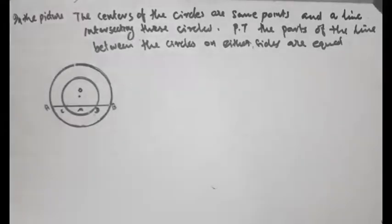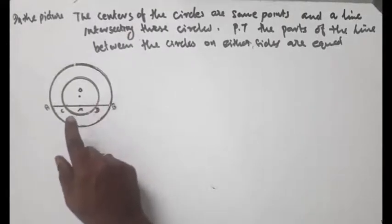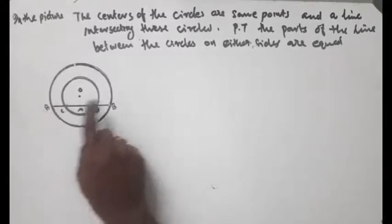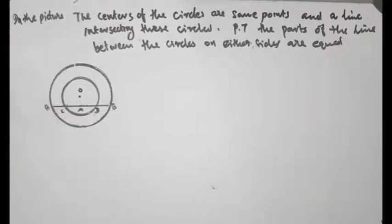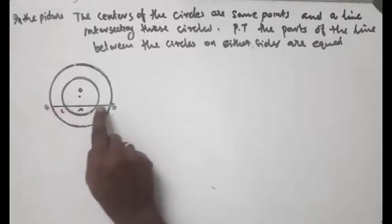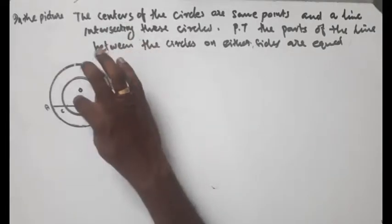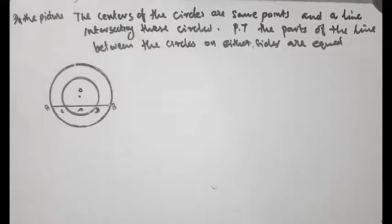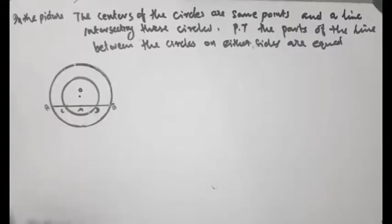In the picture, the centers of these two circles are the same point, and a line intersects these circles at A, B, C, D. Then prove that the parts of the line between these circles on either side are equal. The two circles share the same center point.